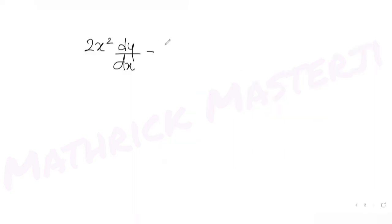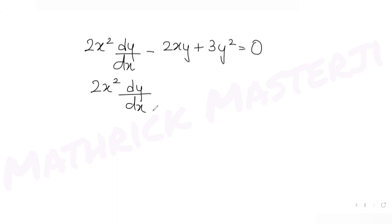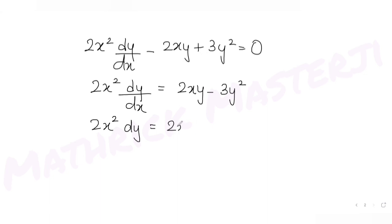We have the differential equation: 2x² dy/dx minus 2xy plus 3y² equals 0. To solve this, let's rearrange — taking the other two terms to the right-hand side gives 2xy minus 3y². Multiplying dx across gives: 2x² dy equals (2xy minus 3y²) dx.